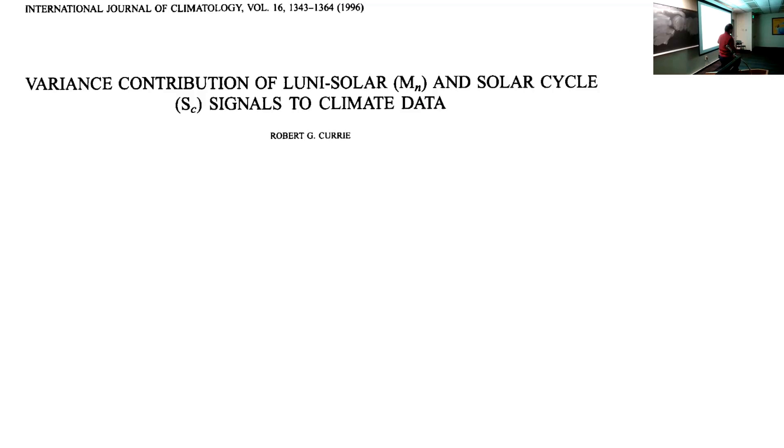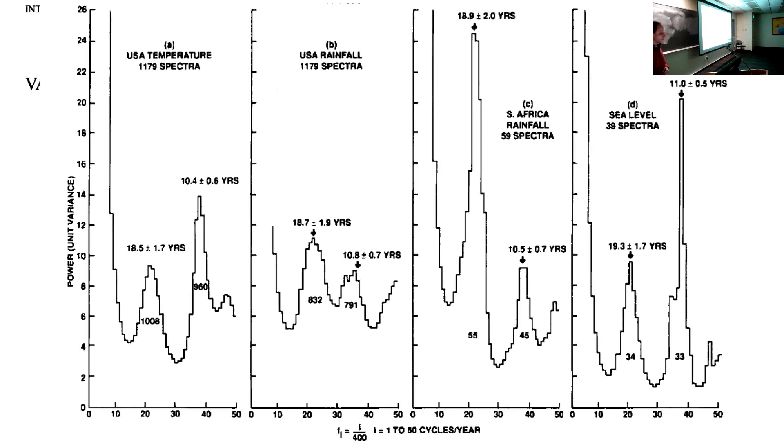Also I'm arguing that we should consider the periodicity of the solar activity between 10 and 11 years. Actually, you have to go back to our own Bob Currie. He was part of the Institute of Terrestrial and Planetary when I was here. He talks about the contribution of both the nodal precession, which he calls lunisolar here, and the solar cycle on climate data. This is a sort of a synthesis of 16 years of papers that he had published on the topic, looking at different parts of the Earth.